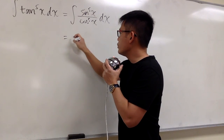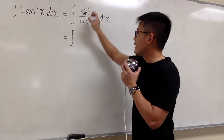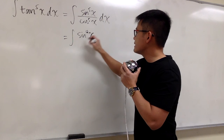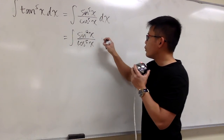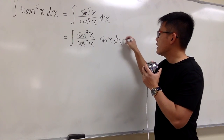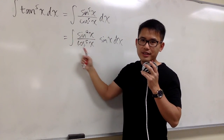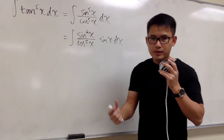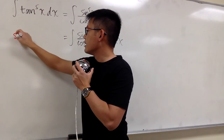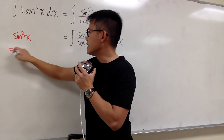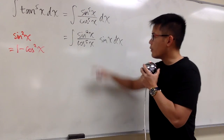This is going to be an integral, and I'm going to split this up. I'm going to have sine to the fourth power of x over cosine to the fifth power of x, with one sine factor pulled to the side. We're going to change that sine to the fourth power into a cosine expression. We know sine squared x equals 1 minus cosine squared x.